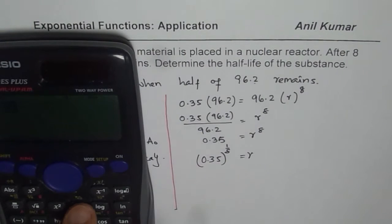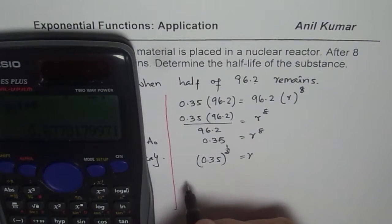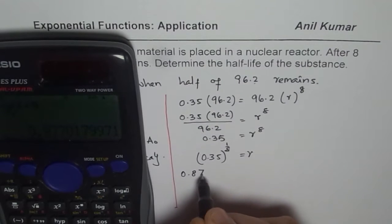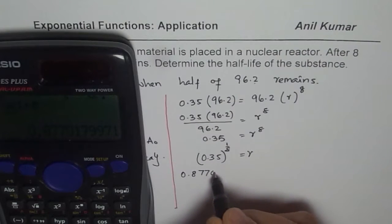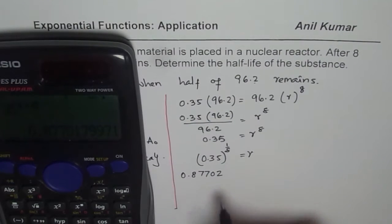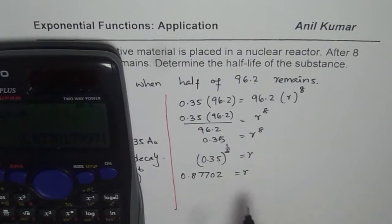So 0.35 to the power of 1 divided by 8 is equal to how much? So that is equal to 0.8770. So we can write 0.877. Let us round it. That is R. So that is the rate R for us.